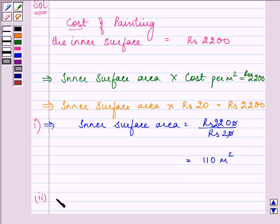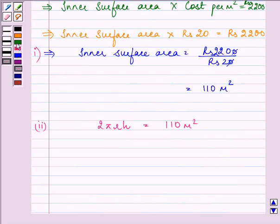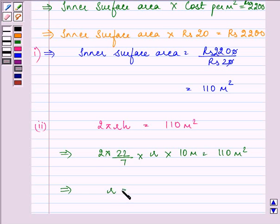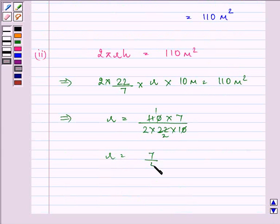Then we need to find the radius. We know that inner curved surface area's formula is 2πrh. That means 2πrh equals 110 meter square. That implies 2 into, the value of π is 22/7, r is what we need to find out and the height is given as 10 meters. So we have it equal to 110 meter square. That means the radius is equal to 110 into 7 divided by 2 into 22 into 10, which is 7/4.